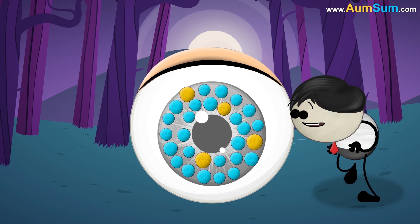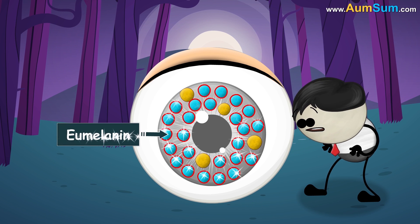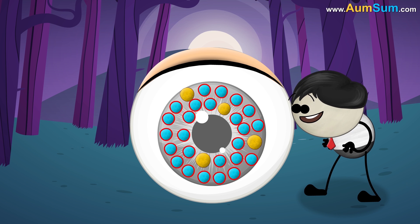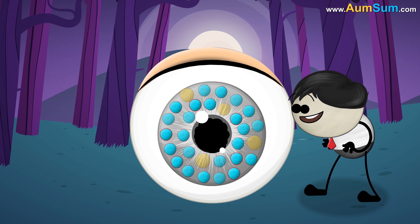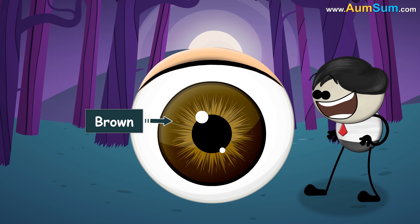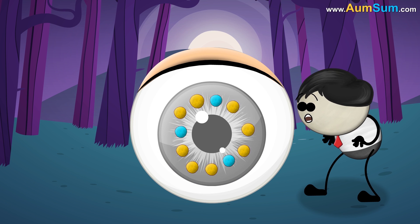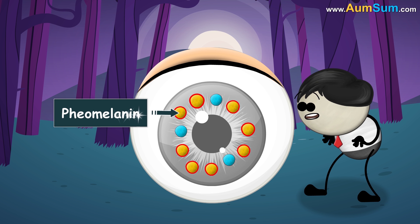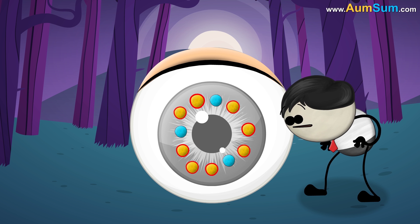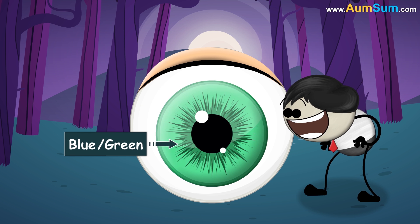If we have more melanin with a higher concentration of eumelanin, then we will have a darker eye color such as brown. However, if we have less melanin with a higher concentration of pheomelanin, then we will probably have blue or green eyes.